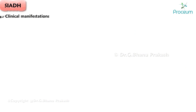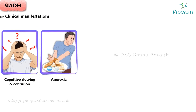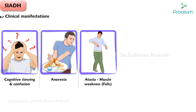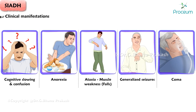Clinical Manifestations. Patients may experience the following symptoms: cognitive slowing and confusion, anorexia, ataxia with muscle weakness causing falls, generalized seizures, and coma. Note: these symptoms are typically only seen with severe or acute onset hyponatremia.